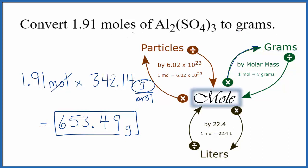So to recap, we took our moles of aluminum sulfate and multiplied by the molar mass to get grams. If we were given grams and we wanted to get to moles, we take our grams, divide by the molar mass, and that will give us moles of this Al₂(SO₄)₃.